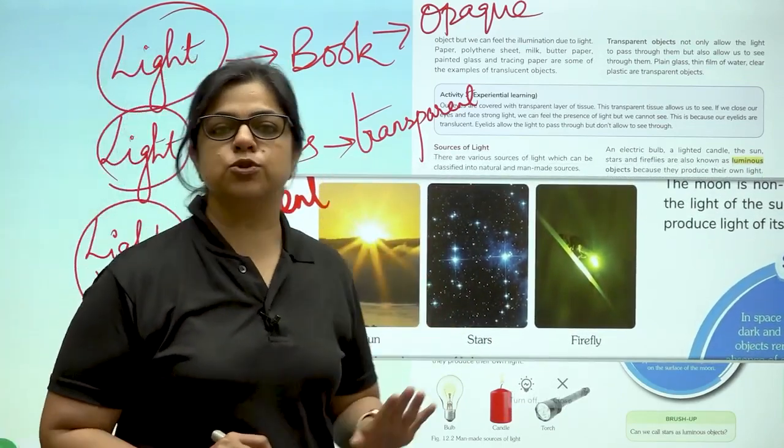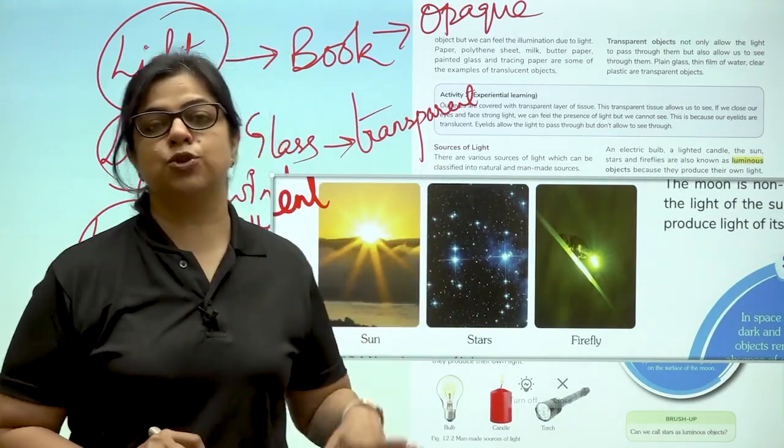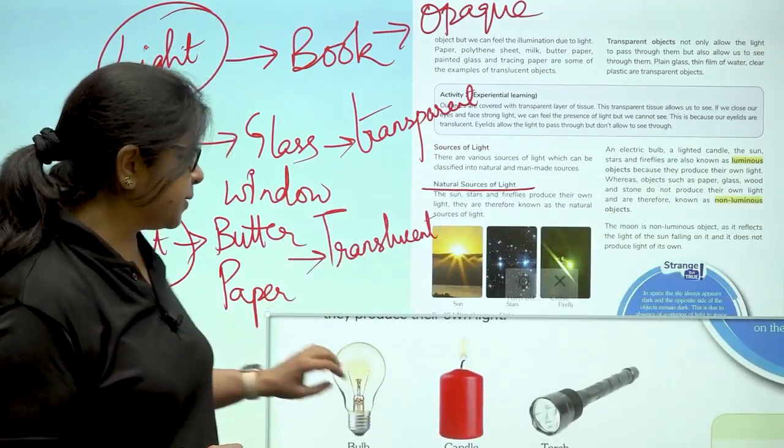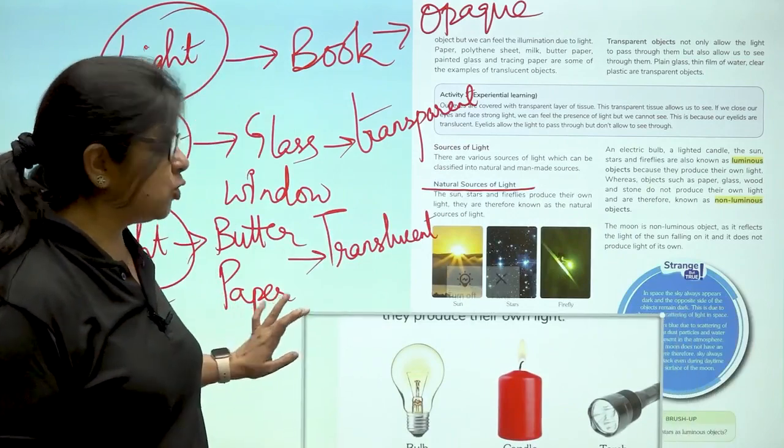The sun is the most important source of light that helps life to exist on earth. And what are the man-made sources of light? They are bulb, candle and torch.